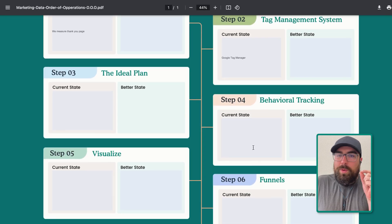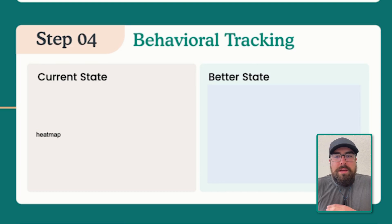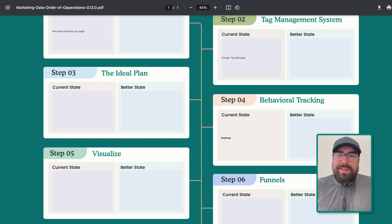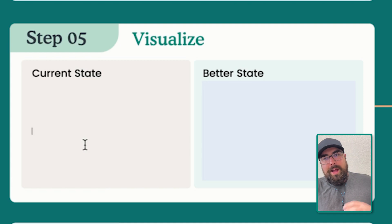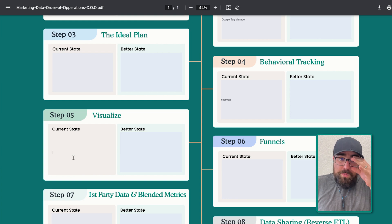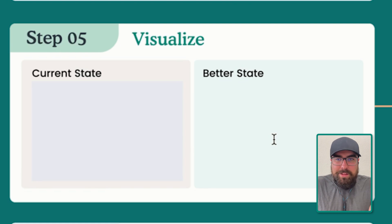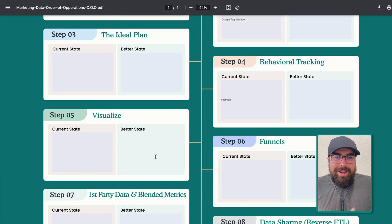Step four, behavioral tracking — how are we currently doing this? You could use heat maps, Microsoft Clarity, VWO, or any of these tools to track behaviors when the outcome does not exist. Then how are we visualizing things? Are we using a Looker Studio report, Tableau, or Power BI? That is how we build out our visualizations. Do you have a team managing this and building out hyper-actionable visuals? Or does somebody just go in once a week and hope to find an answer?